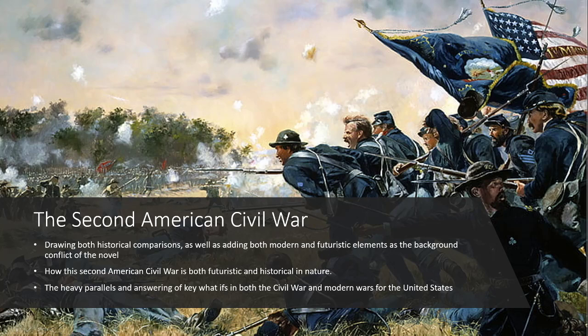The main conflict in American War is the Second American Civil War. This draws from historical comparisons while adding both modern and futuristic elements to create the background for the novel. This Second American Civil War is both futuristic and historical in nature, with heavy grounding in historical wars fought both on American soil and abroad. Those parallels and the answering of key 'what-ifs' help shape a war that feels realistic while also creating the backdrop for the sci-fi novel.